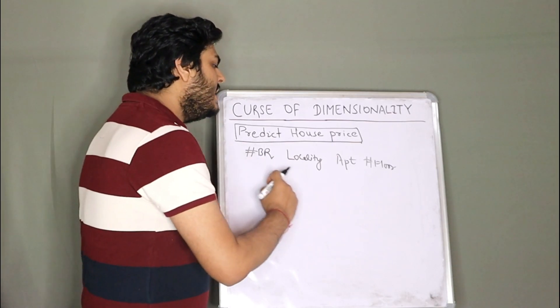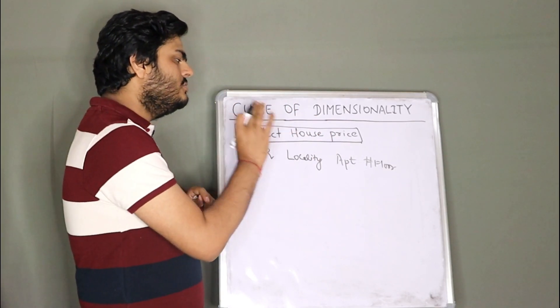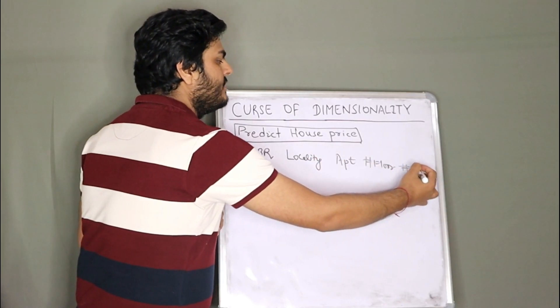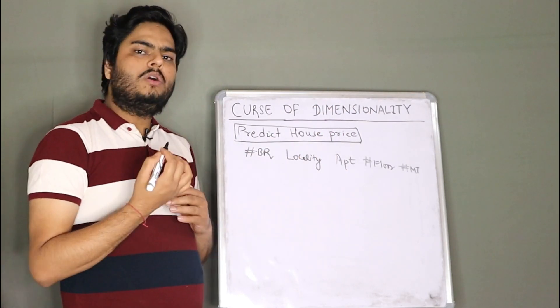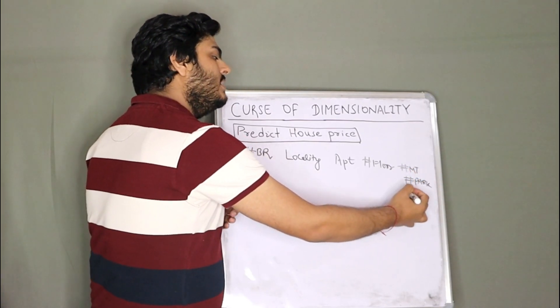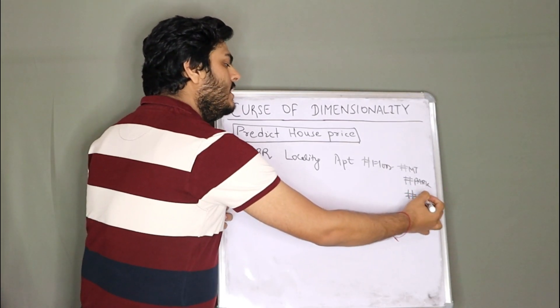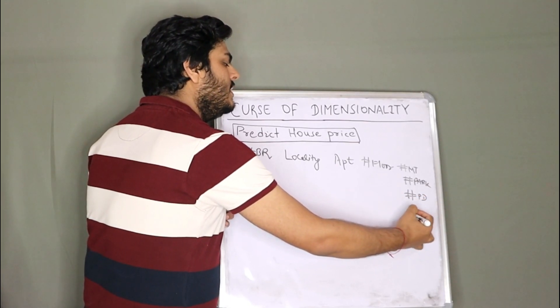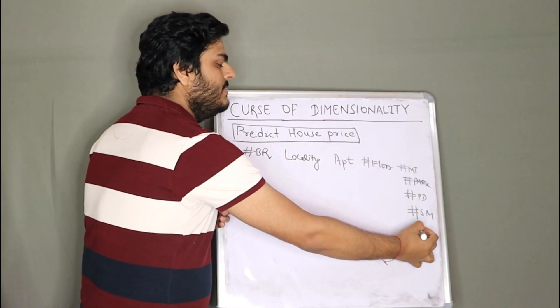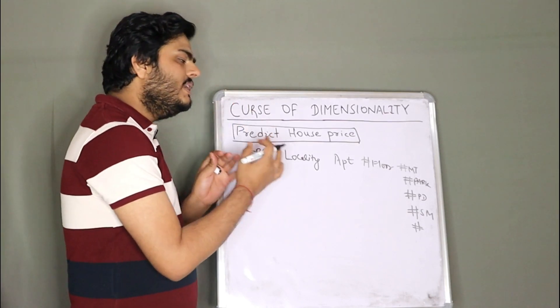But what happens if we keep adding on many variables? For example, these are my independent features. Of course, the target feature is my house price. Let's say I add here number of movie theaters nearby. I add a variable here and call that variable as how many parks are there nearby. I add a variable and call this as what is the population density in that particular area. I add one more variable here and I may call that how many shopping malls are in the nearby area, shopping malls in nearby area. How many offices are in nearby area?